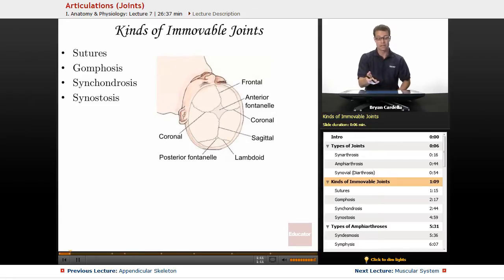So we're going to start off with those synarthrosis, the completely immovable joints. The first one is sutures, and sutures are most obvious in the skull. Here's an image of a baby's head.